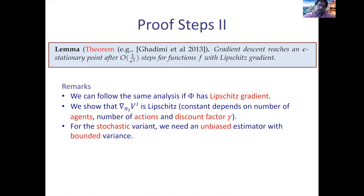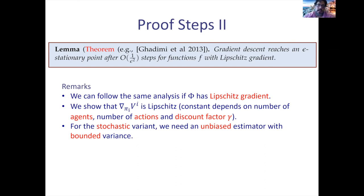Also important: this random variable must have bounded variance. When you use stochastic gradient descent, you don't want the gradient estimate to have unbounded variance — this is catastrophic and you cannot show convergence. We need an estimate that is not only unbiased but also has bounded variance. For this, direct parameterization leads to unbounded variance, so you cannot use it. You need another parameterization — greedy parameterization.